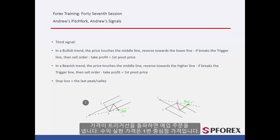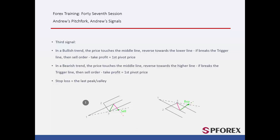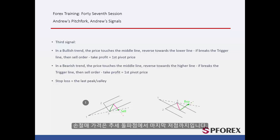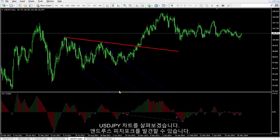After the price crosses the trigger line, a trader can place a buy order with TP price equal to the first pivot price. SL price is between the breakout point and the last valley.